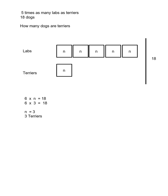Problem number five: there are five times as many labs as terriers and there are 18 dogs. How many dogs are terriers? We know the total is 18. Labs are five times as many, so five N's for labs plus one N for terriers gives six boxes. Six times N equals 18. Six times three equals 18, so N equals three. There are three terriers.